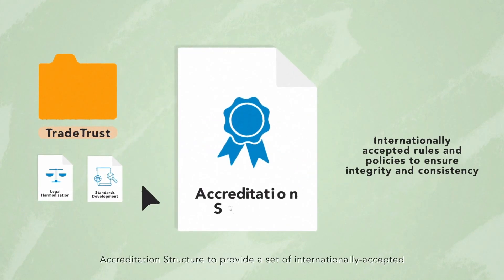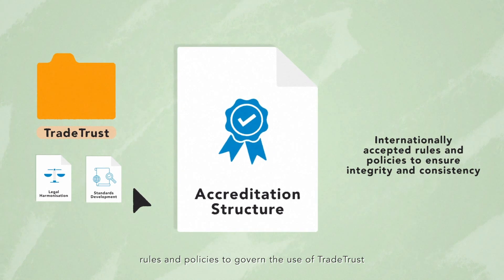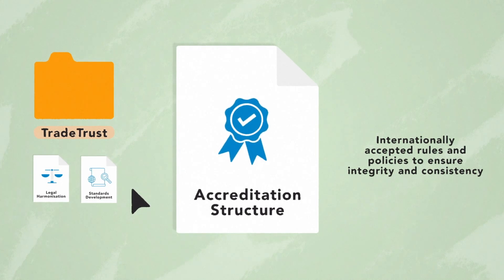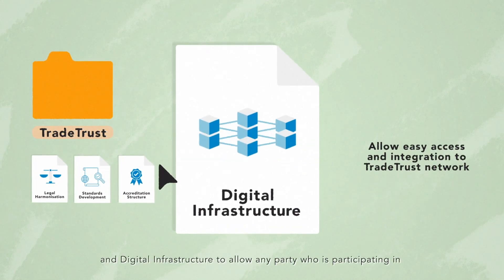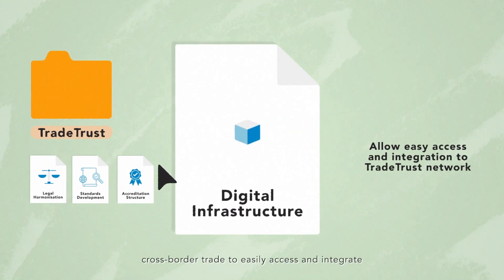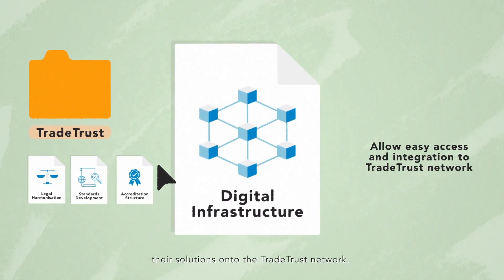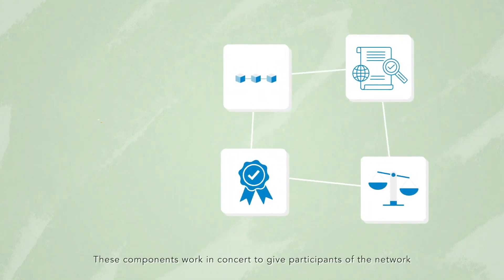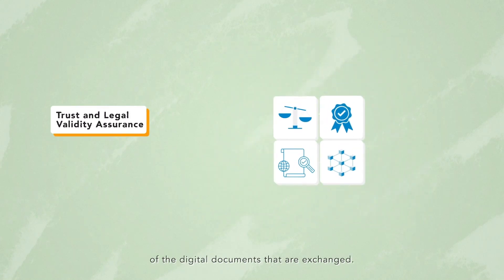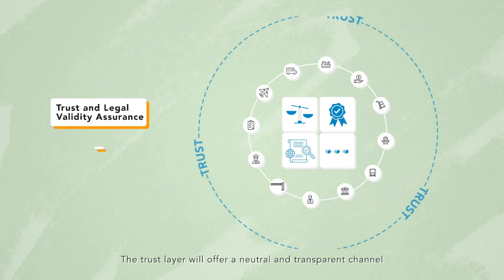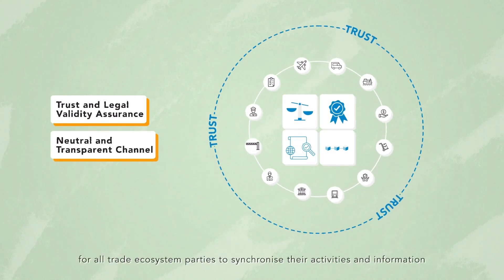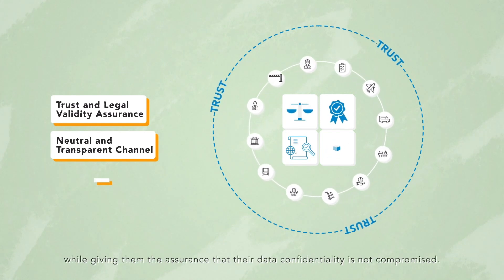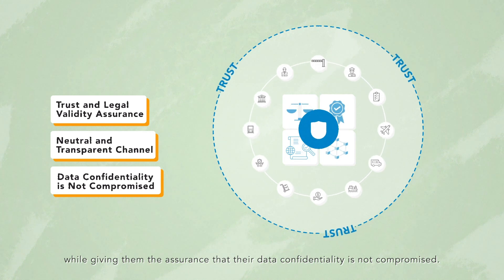Accreditation structure to provide a set of internationally accepted rules and policies to govern the use of Trade Trust, to ensure integrity and consistency of the network. And digital infrastructure to allow any party participating in cross-border trade to easily access and integrate their solutions onto the Trade Trust Network. These components work in concert to give participants of the network the trust and legal validity assurance of the digital documents that are exchanged. The trust layer will offer a neutral and transparent channel for all trade ecosystem parties to synchronize their activities and information, while giving them the assurance that their data confidentiality is not compromised.